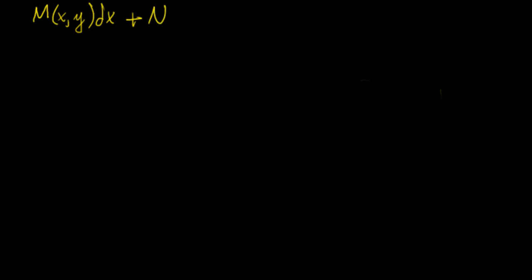In the previous video we talked about how to solve an inexact differential equation of first order. We looked at equations of the type M(x,y)dx + N(x,y)dy = 0, and we looked at cases where the partial derivatives were equal and where they were not, and what we could do to turn it into an exact differential equation by performing algebraic manipulation and introducing an integrating factor.